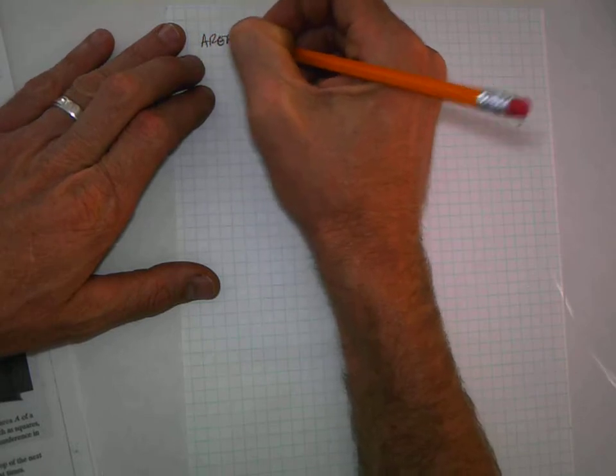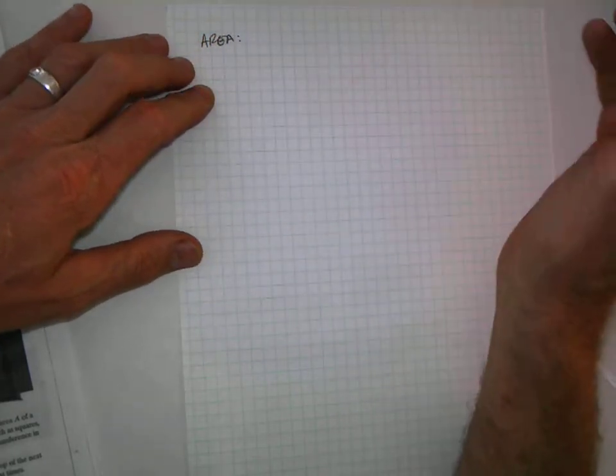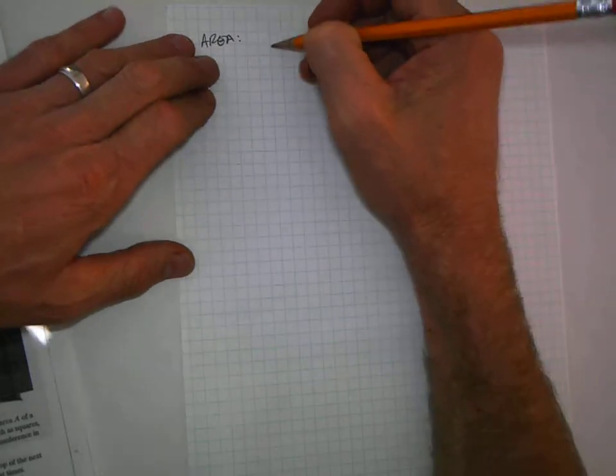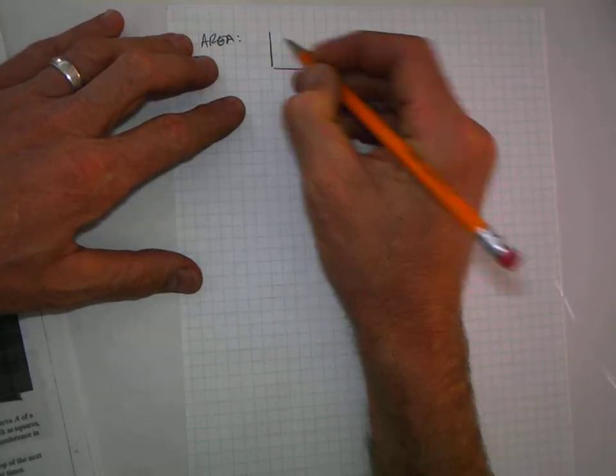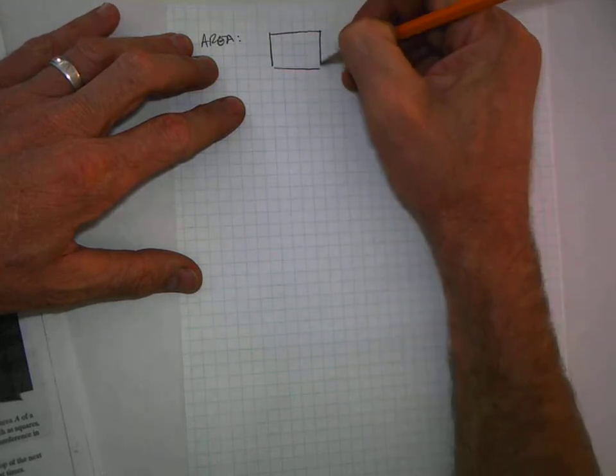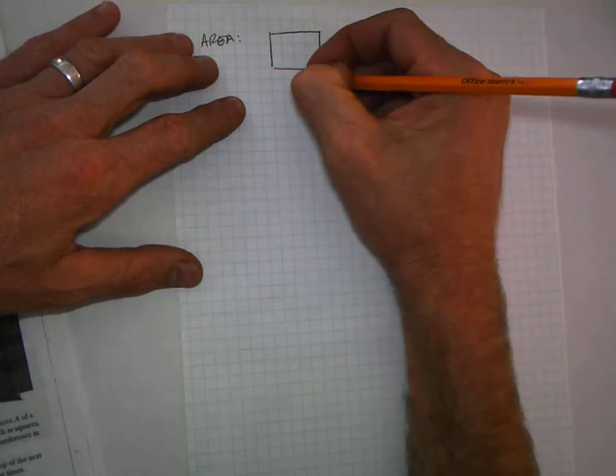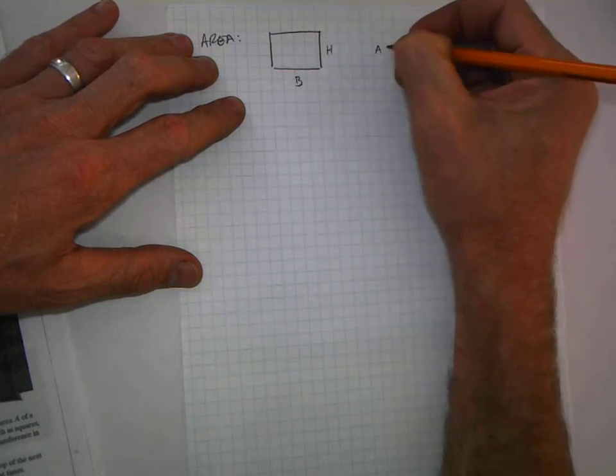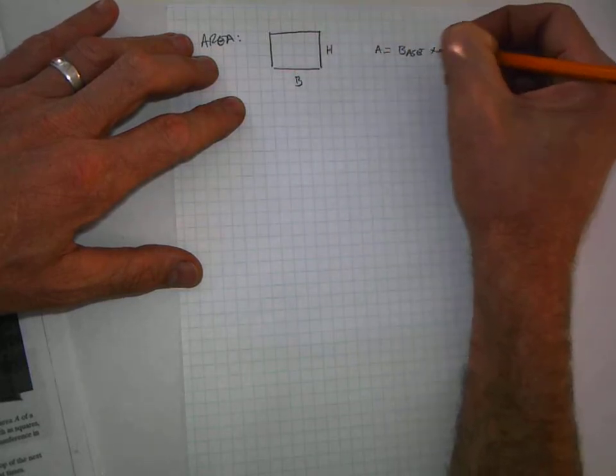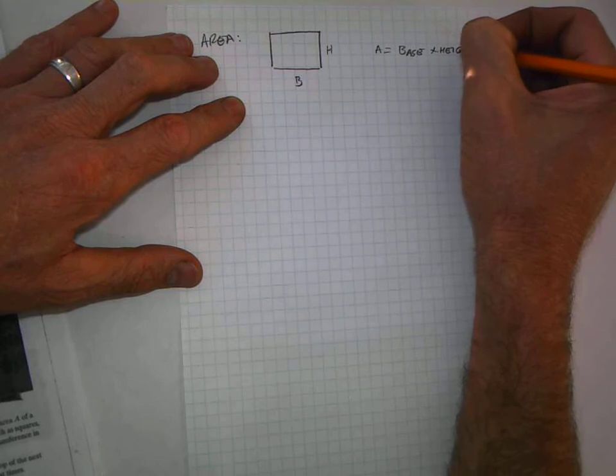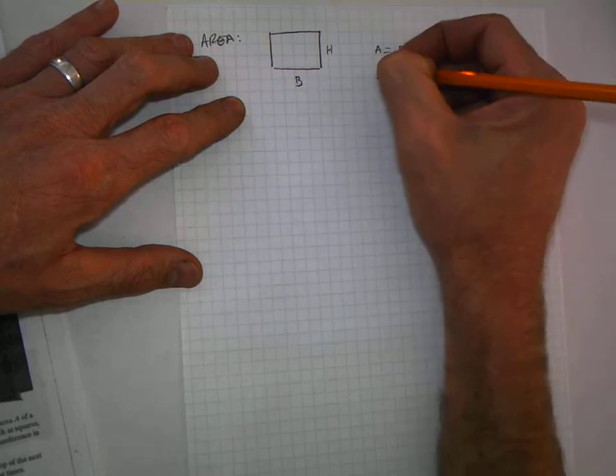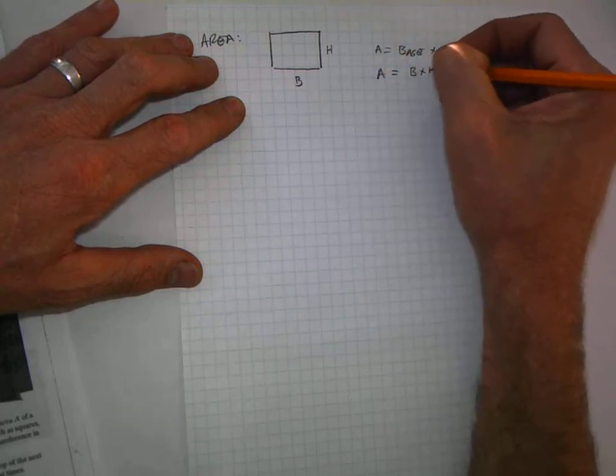Area is the space inside a shape. For basic shapes like the square, we're going to call this the height and this the base. The area equals base times height: A = b × h. I'm sure you've done this before.